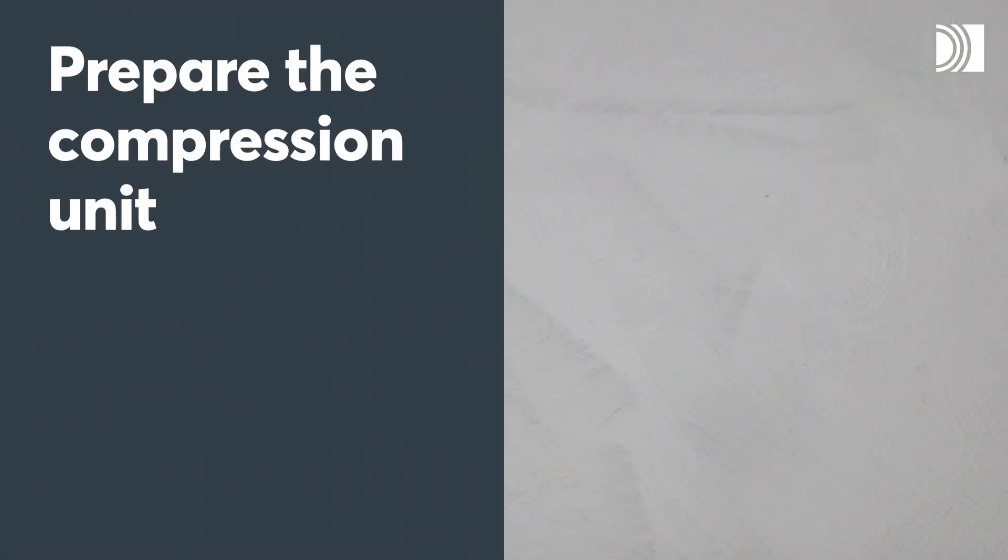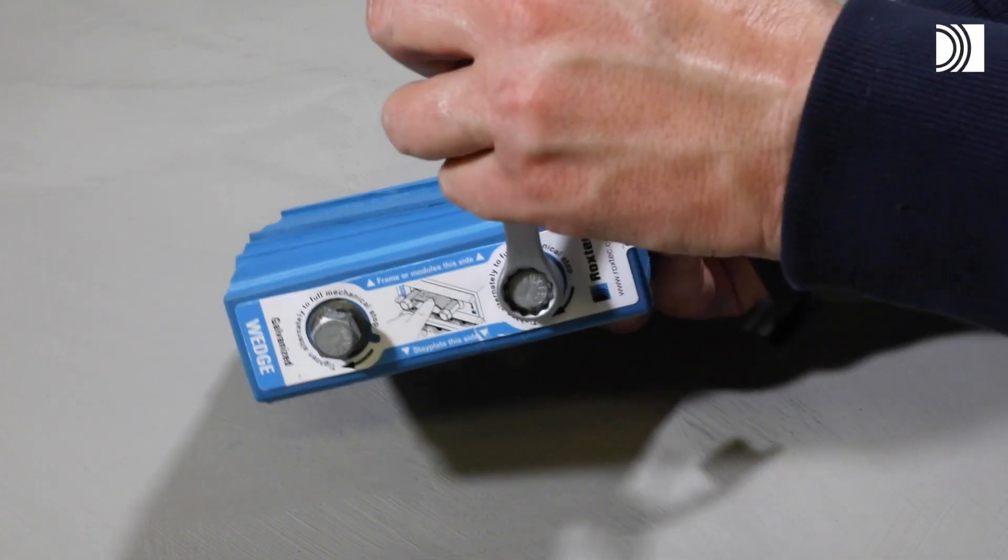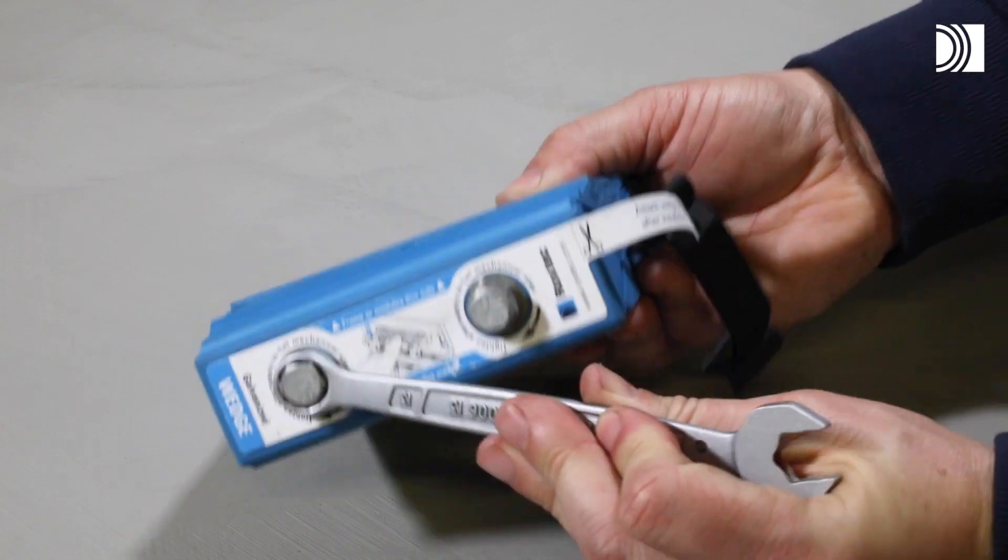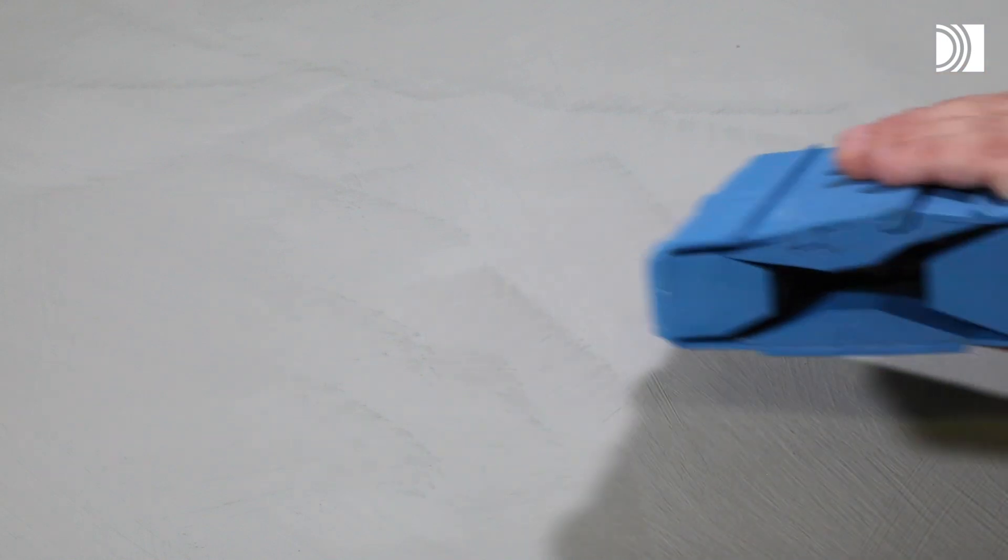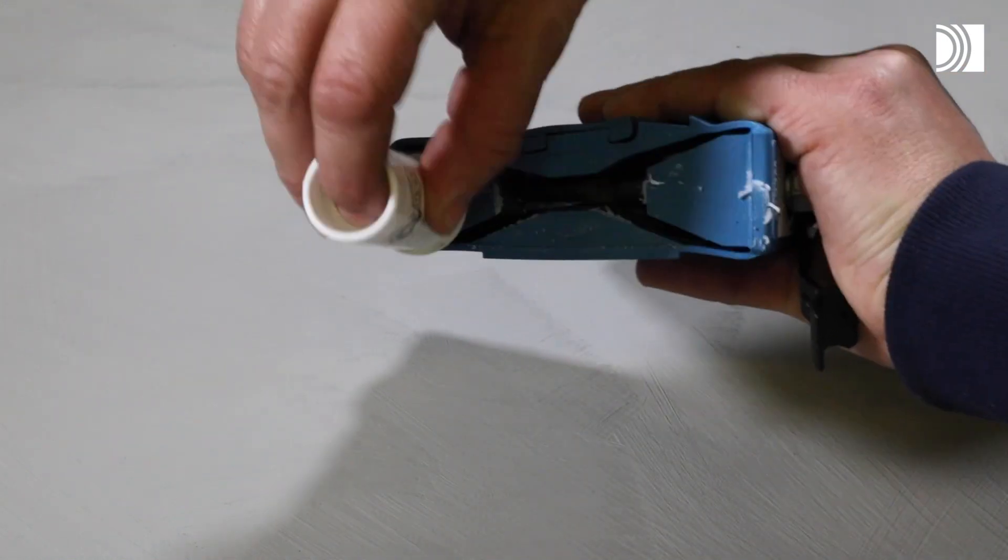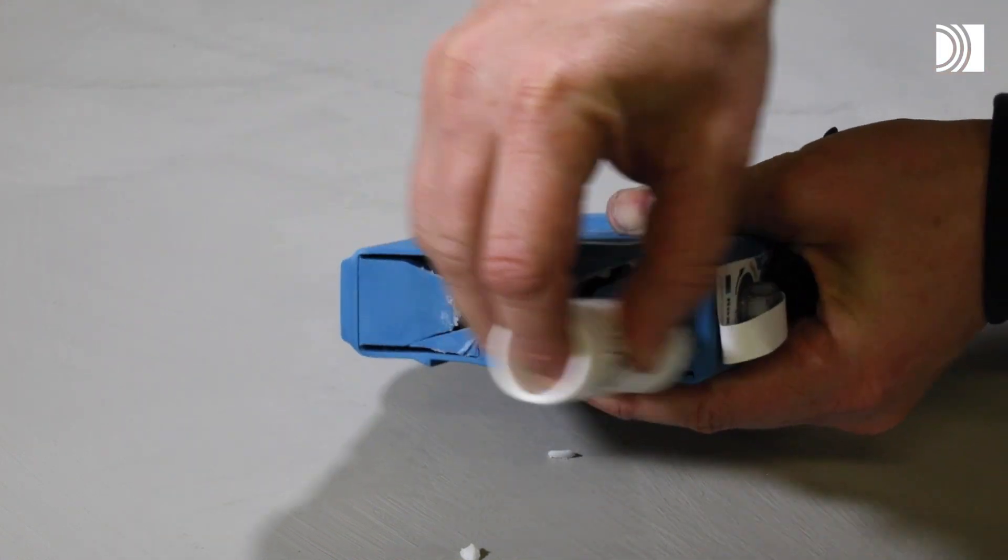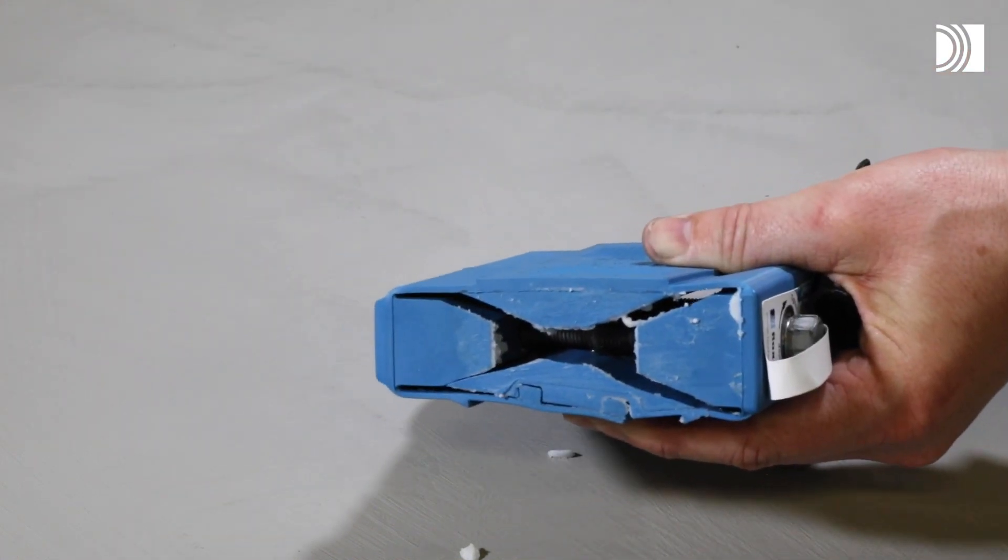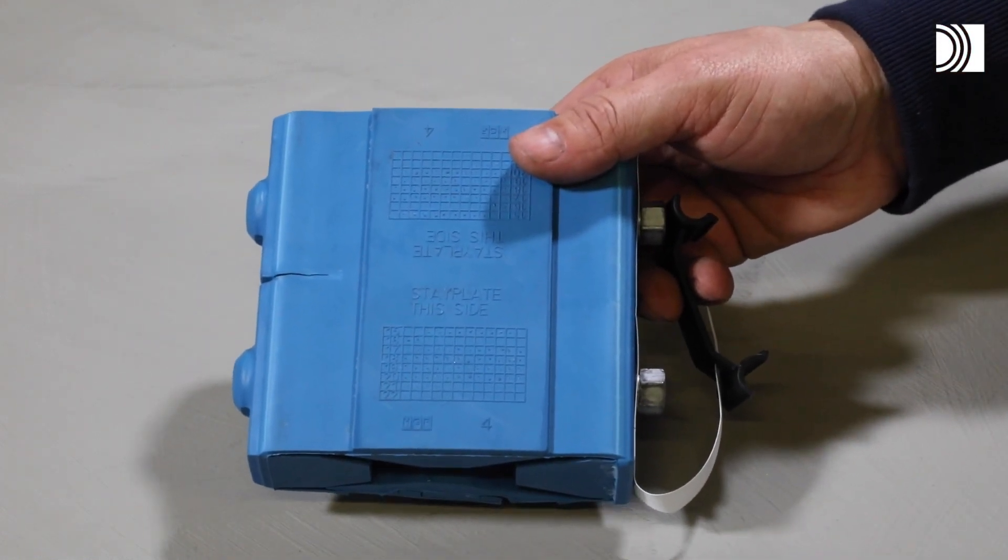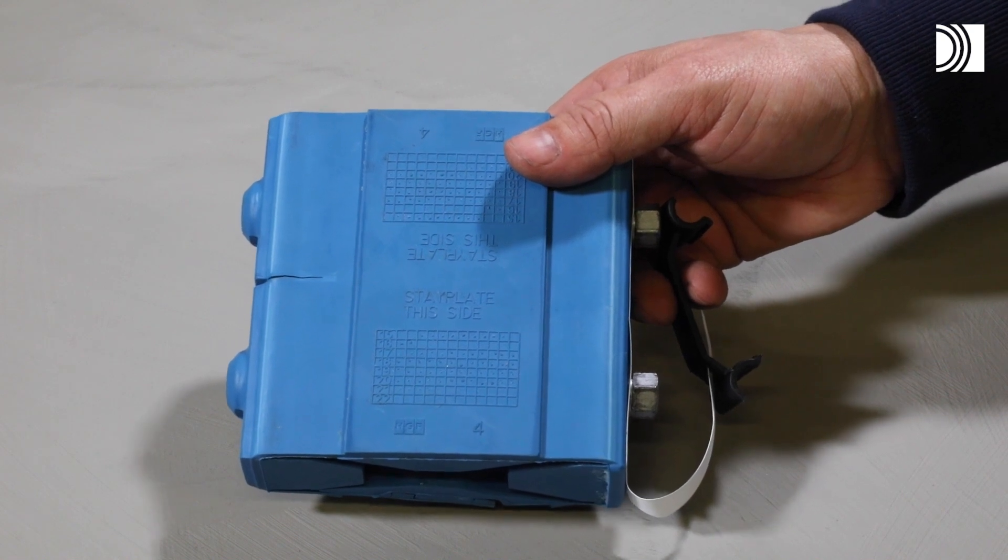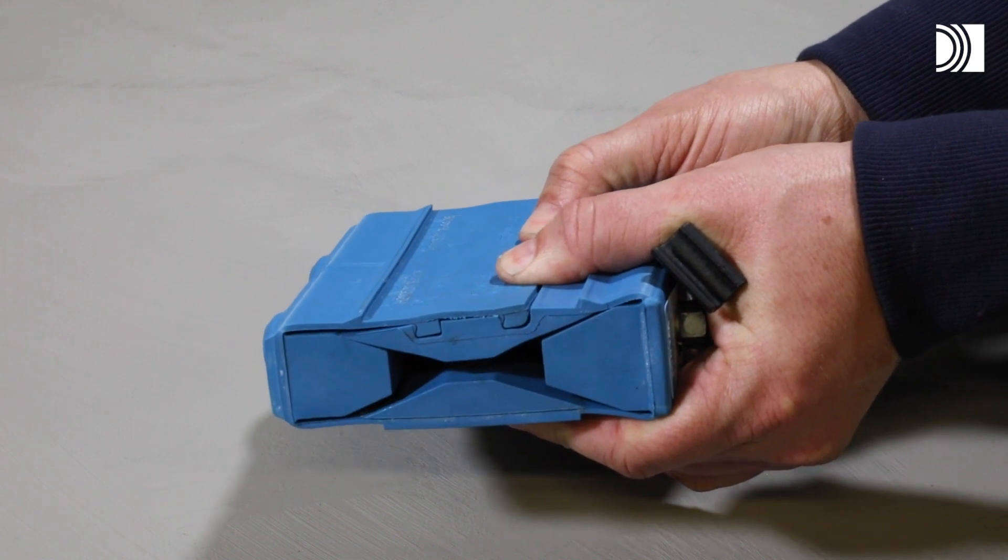Prepare the compression unit. Fully untighten the screws to decompress the wedge. Lubricate the short sides of the wedge. The wedge face marked stayplate this side shall face a stayplate. The stop flanges shall face the frame.